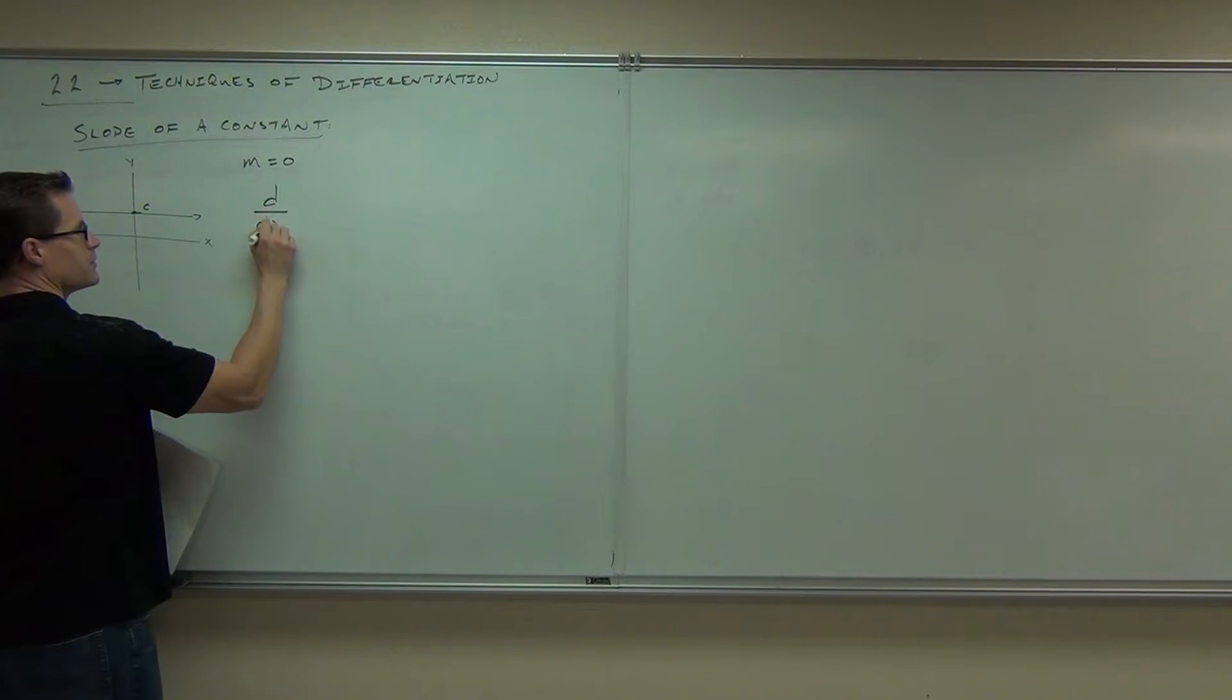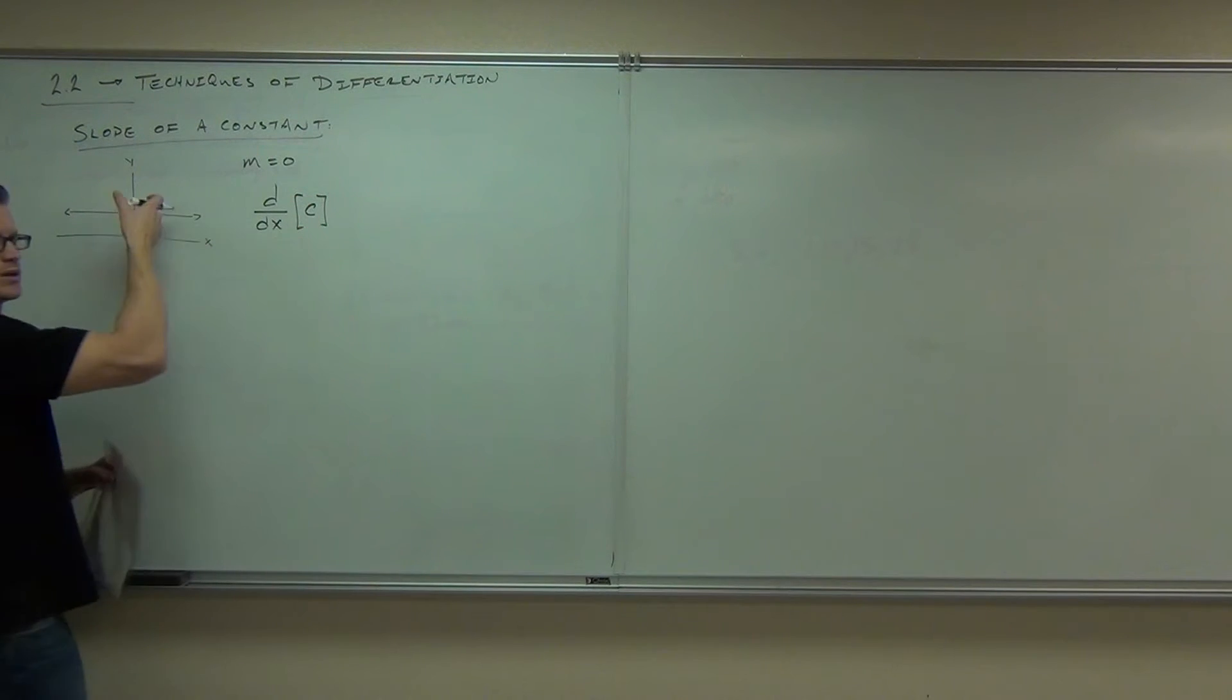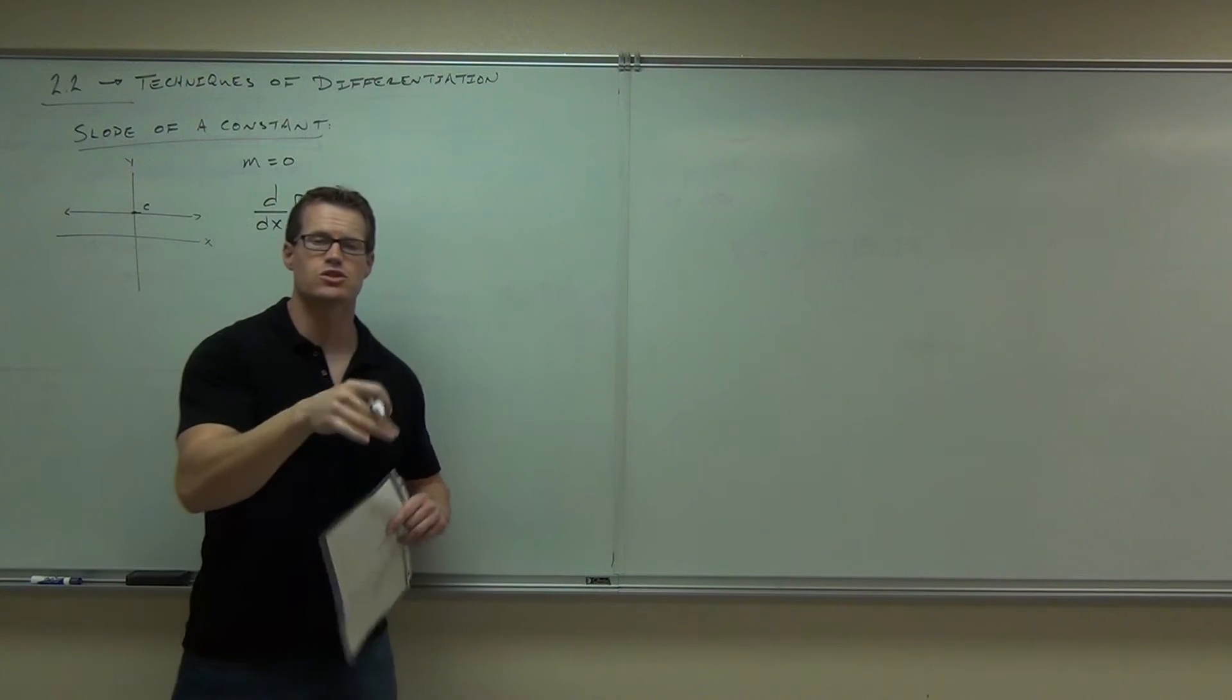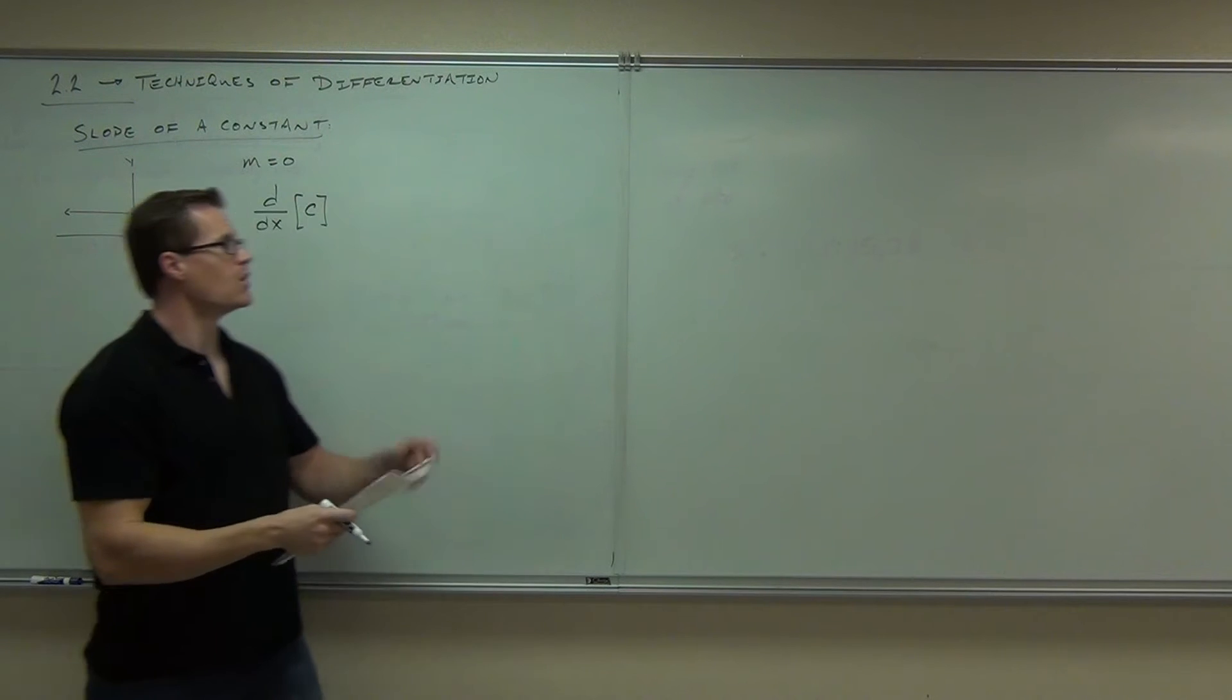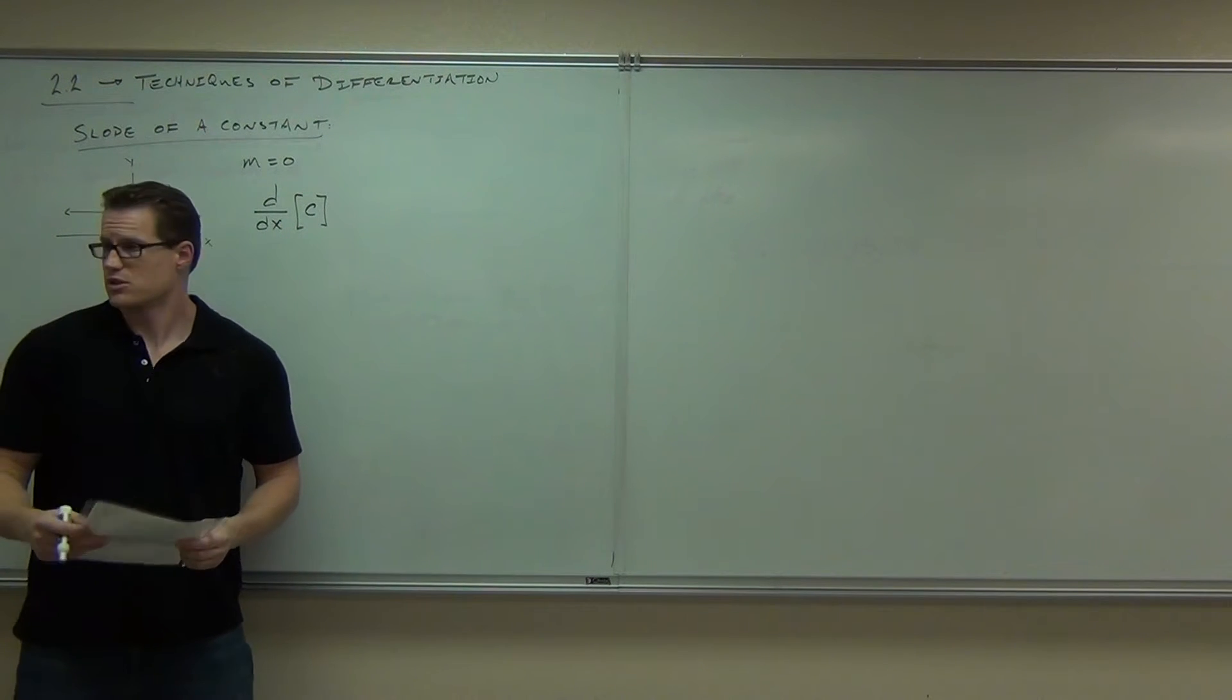If derivative means slope of a function, and the slope of our function is always zero no matter what, then the derivative of a constant—I've been completely general about this constant. I don't know what it is. It could be negative, positive, whatever. What's the derivative of a constant? Basically, it's asking this question. Don't forget what a derivative means. Derivative means slope. What's the slope of a constant line? Zero.